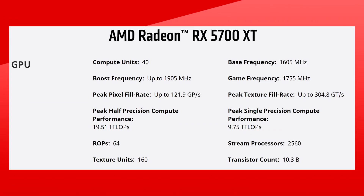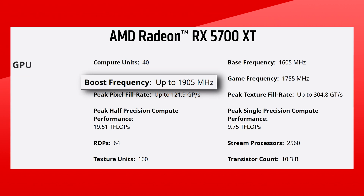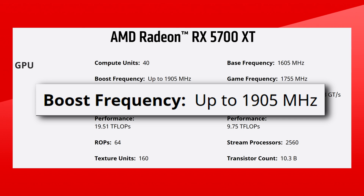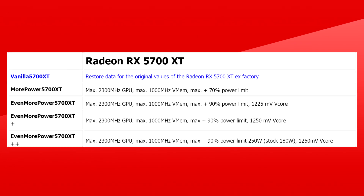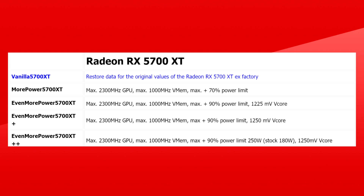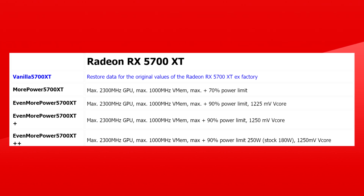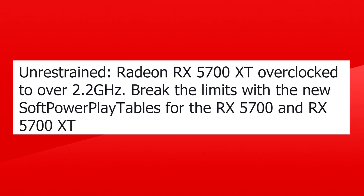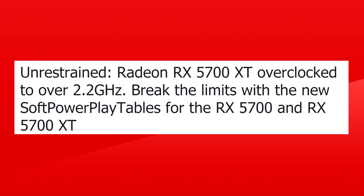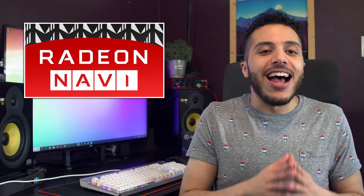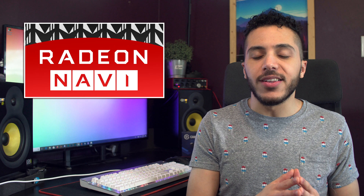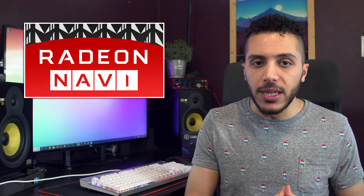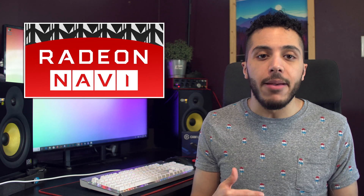In the case of the 5700 XT, the original boost clock is at 1905 MHz, and using the power play table mod, the gains could potentially be even bigger with a max clock speed of 2300 MHz. That's 20.5% faster than the original boost clock. Igor was only able to reach 2.2 GHz and some change, which is still a staggering 15.5% increase. This mod is not suited for blower-style coolers, and even Tom's Hardware puts a big red warning letting you know that you could quickly reach thermal limits and cause irreparable damage to your GPU.